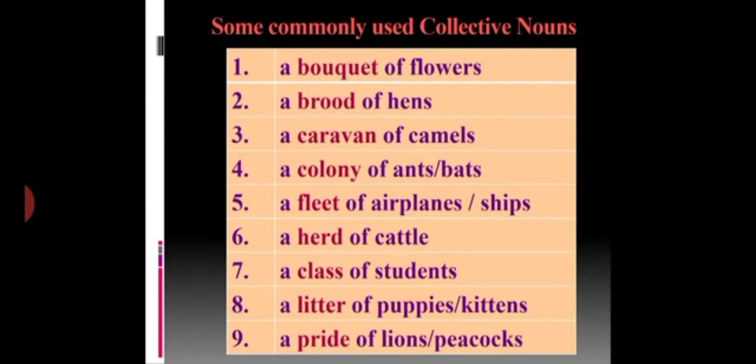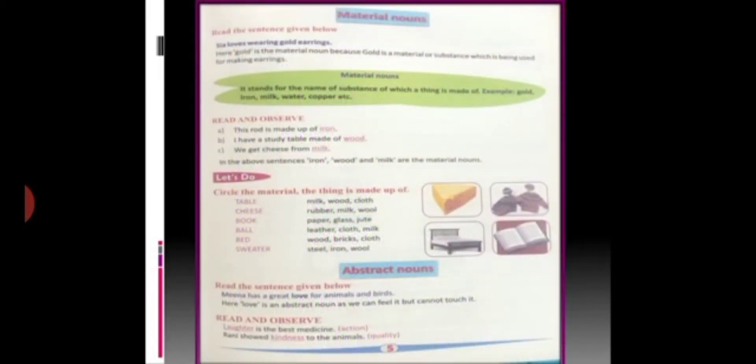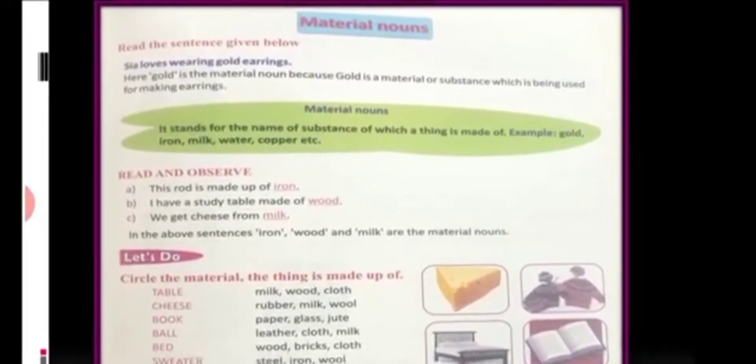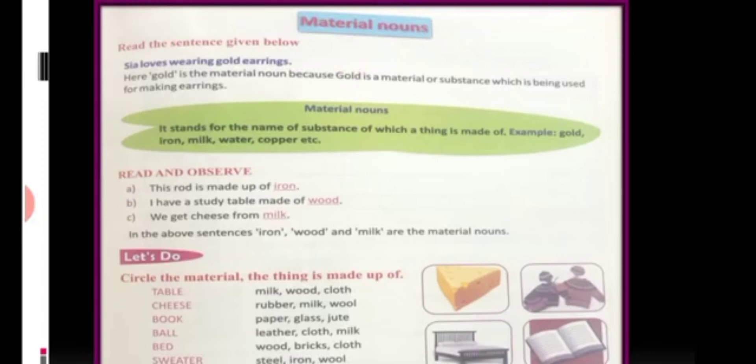Now, let's move ahead to the fourth type of noun that is material noun. As the word itself is telling that it's material noun. So, here we will have the name of the material with which something is made up of.